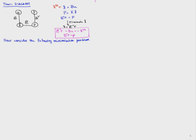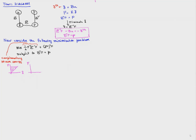Now completely separately, we consider the following optimization problem: minimize one-half F transposed E inverse F plus delta thermal transposed F, subject to the equilibrium constraint B transposed F equals P. This one-half F transposed E inverse F is called complementary strain energy. Graphically, it is the area above the force-displacement curve.